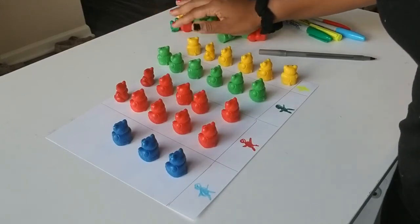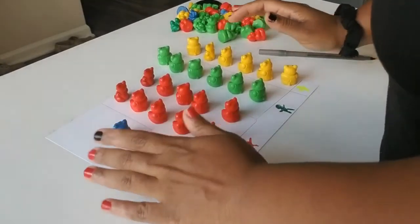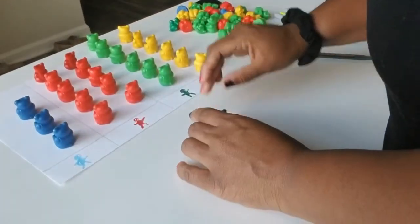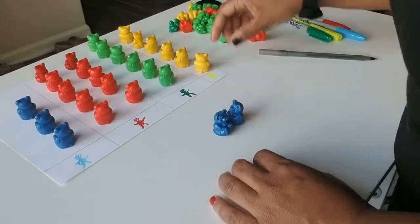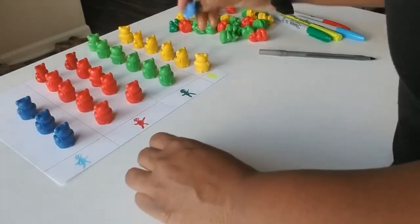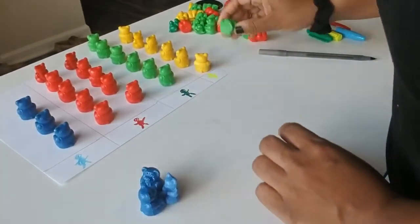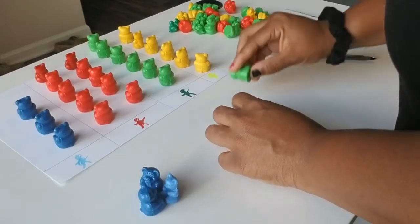So after you do that, then you can have the child sort the bears by color. Have them put the remaining bears in colors. Have them put all the blue bears together, and then you can have them put all the green bears together.